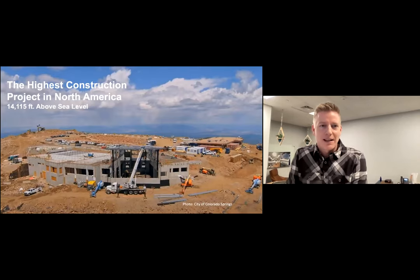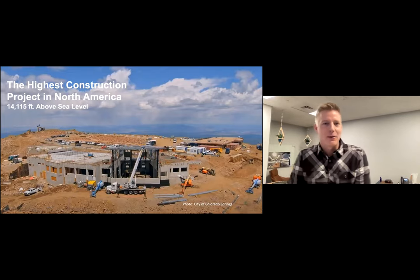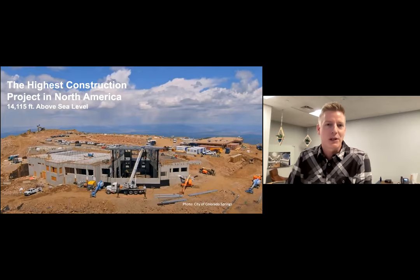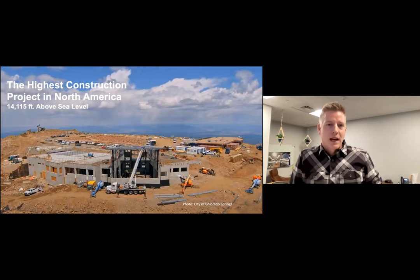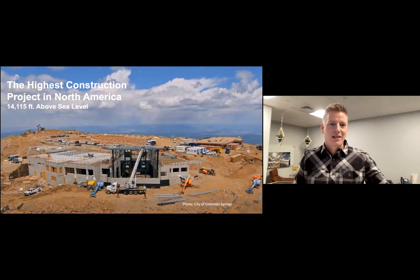Pikes Peak is what's called a 14er — a mountain above 14,000 feet above sea level — a super challenging climate and challenging place to construct a building. There's about 38% less oxygen at the summit. Lightning storms come in without much warning, which is extremely dangerous; about two summers ago, 13 people were struck by lightning while attending the Pikes Peak hill climb race. It's a very dangerous environment if you're not careful.